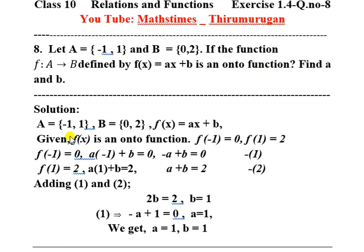Given that f(x) is an onto function. For an onto function, every element in B must have a pre-image in A. So every element in B has a pre-image in A.